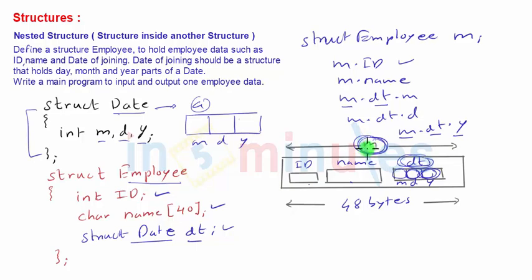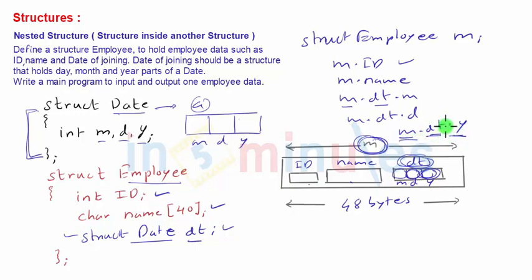So whenever you want to define a structure inside another structure, first define the structure that you want as a member, then define a variable of that structure type inside the outer structure. To access its members, use the notation: structure_name.nested_structure_name.member_name. To access normal variables, use structure_name.member_name. We will now see this complete program working in Dev-C++.